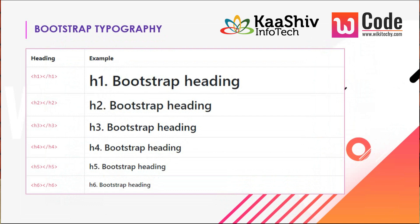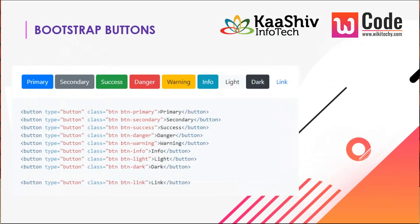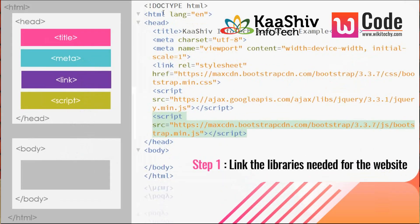Bootstrap typography gives h1 and other heading tags a unique style and format. For buttons, you don't need to manually set colors — just use classes: btn-primary gives blue, btn-success gives green, btn-danger gives red, btn-warning gives yellow, btn-info gives light blue, btn-light, btn-dark, and btn-link for a link button.